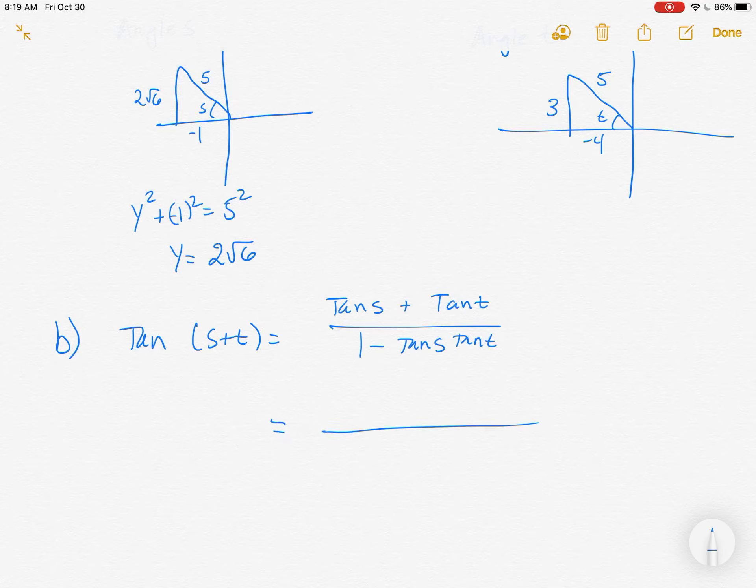we can see that right above. Its opposite over adjacent, so it's going to be negative 2 root 6 over the negative 1. Over here, tangent of T is negative 3 fourths. And that's all over 1 minus these same two numbers.